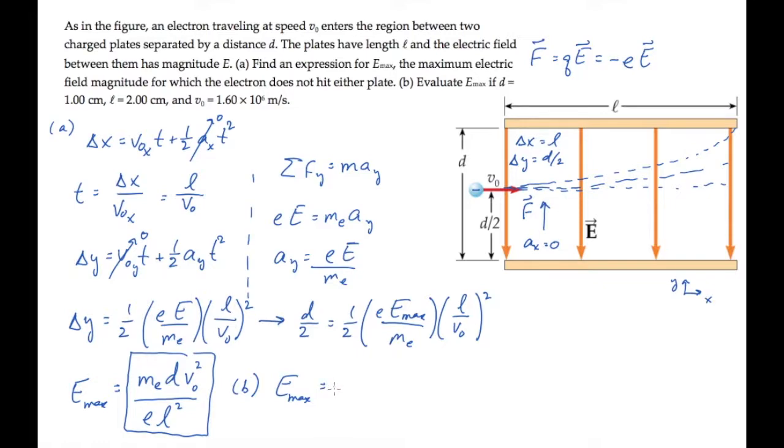Part b asks us to calculate this electric field, given some values. So we can substitute all the known numbers, including the electron mass and magnitude of electron charge, to find the electric field as 364 newtons per coulomb.